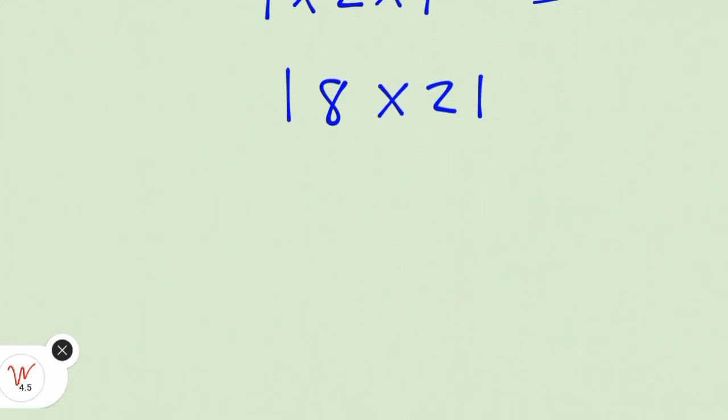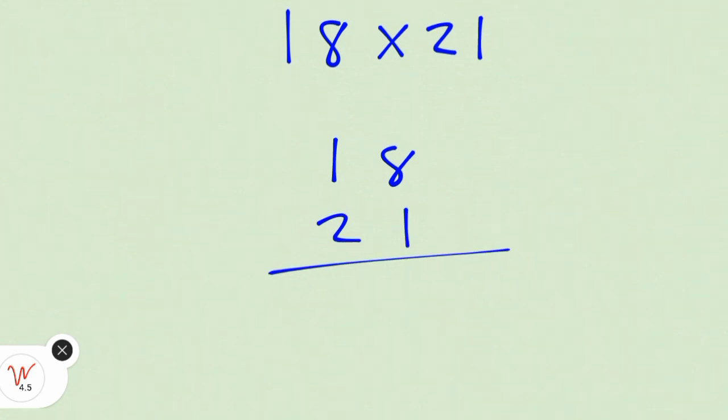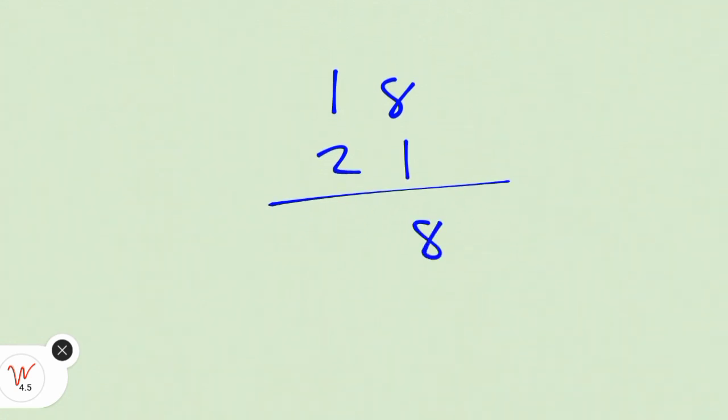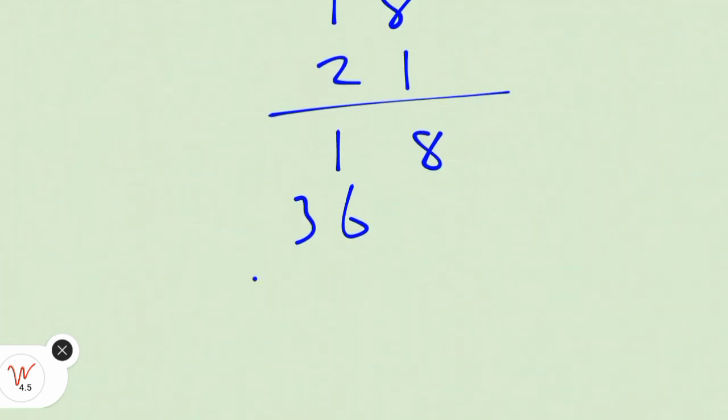Let's multiply eighteen by twenty-one. We have eighteen times twenty-one. Eight times one is eight. Two times eight is sixteen, carry one. Two times one plus one carry is three. Thirty-six. Therefore, eight plus zero is eight, one plus three is four, three is three.